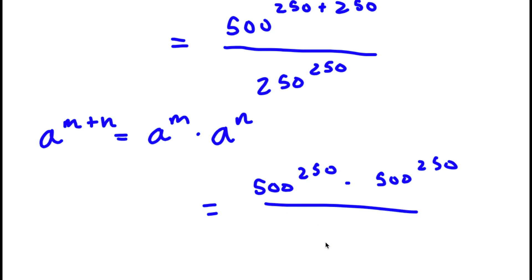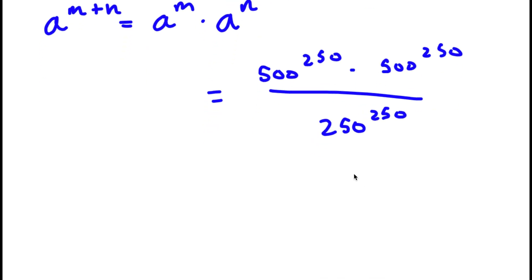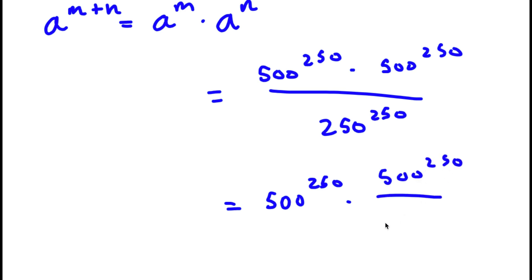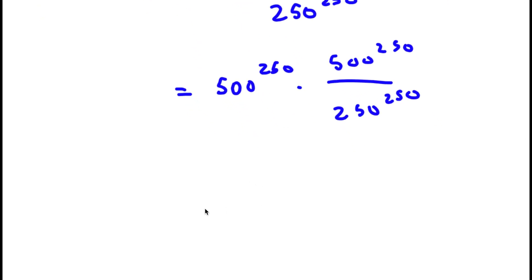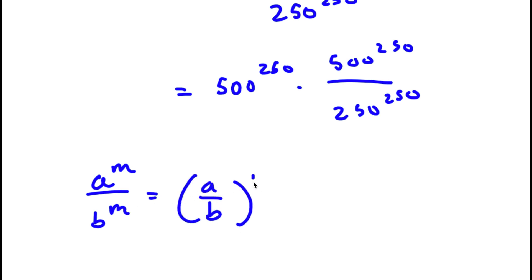Now I have 500 to the power of 250 times 500 to the power of 250, over 250 to the power of 250. If I have something in the form A to the power of M over B to the power of M, this is the same thing as A over B to the power of M.